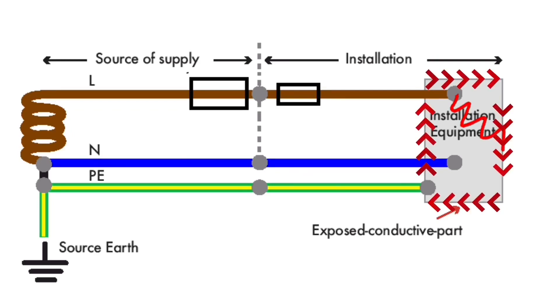The exposed conductive part would become live. This is connected to the circuit protective conductor, the CPC. This would become live.